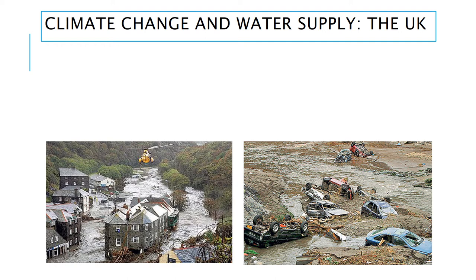Water that gets into rivers quickly is likely to overwhelm them. You've got steep-sided valley sides, loads of rain, and all that water overwhelms the river. You can see houses and cars that have been moved by the force of the water — this is a big flood. These photographs were taken in the village of Boscastle in Cornwall. It looks almost like a disaster scene from a tsunami movie, but it happened in our own country. Very hot dry conditions like we've got at the moment can lead to flooding.